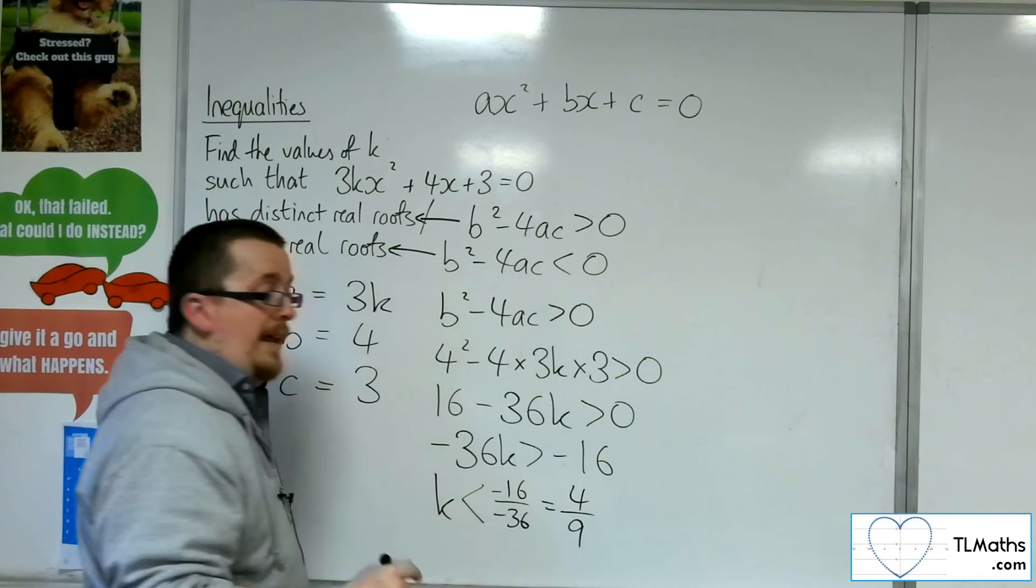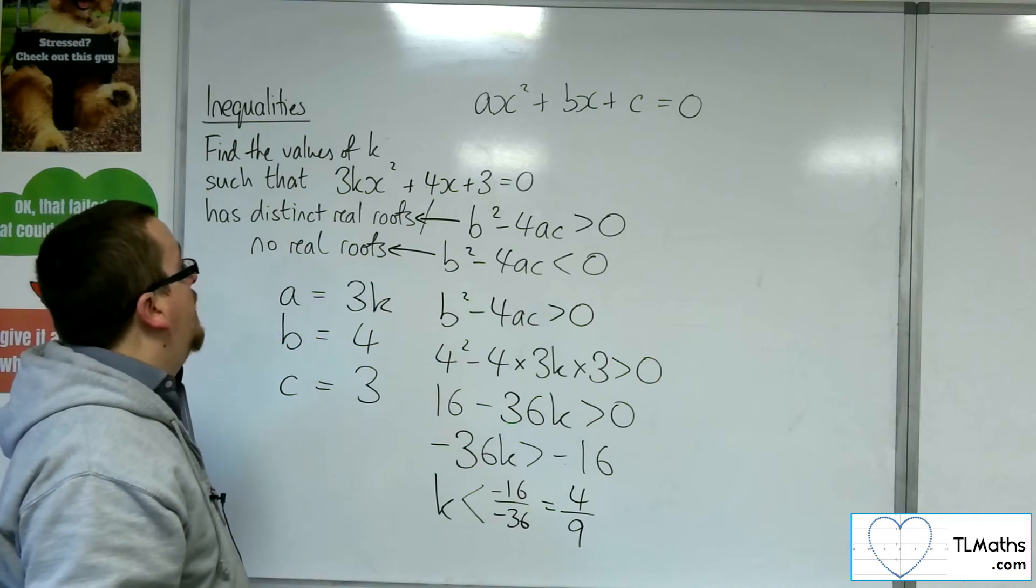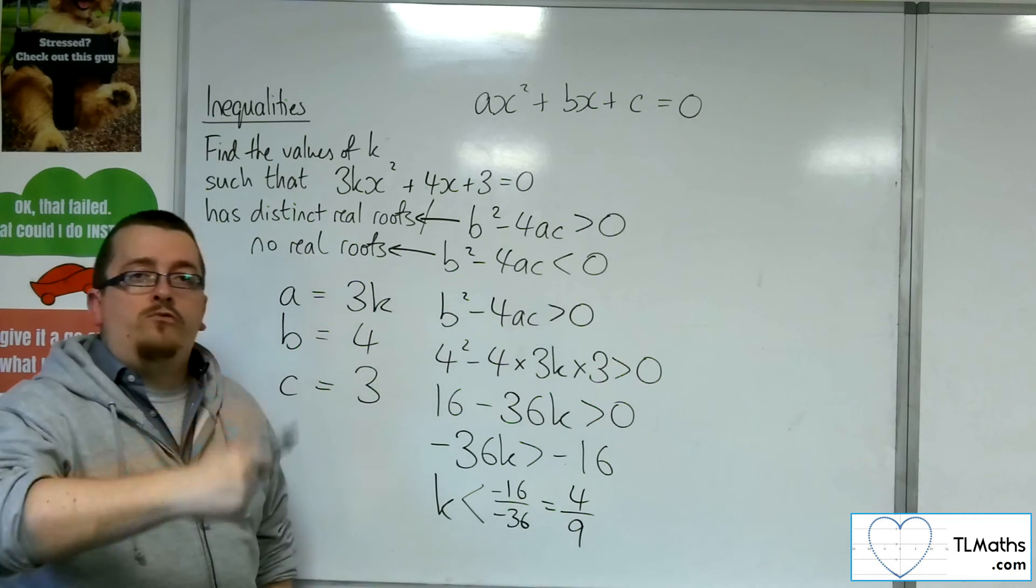So k would have to be less than 4 ninths, in order for this quadratic equation to have two distinct real roots.